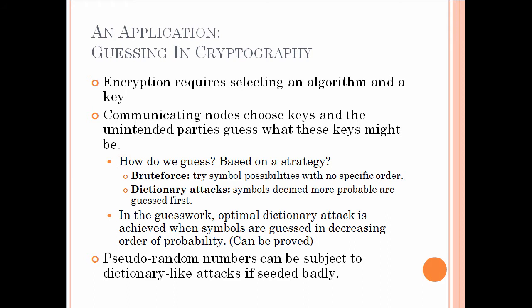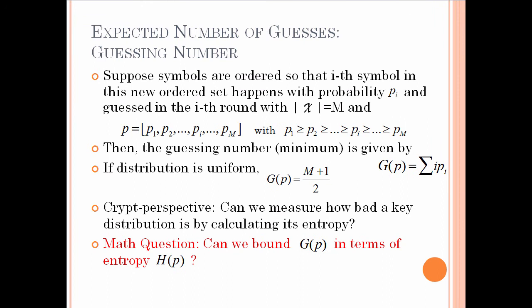One more point: pseudo-random numbers can be subject to dictionary-like attacks if seeded badly, because this would generate a biased distribution of keys. Therefore the guessing number would be smaller compared to the uniform distribution case.